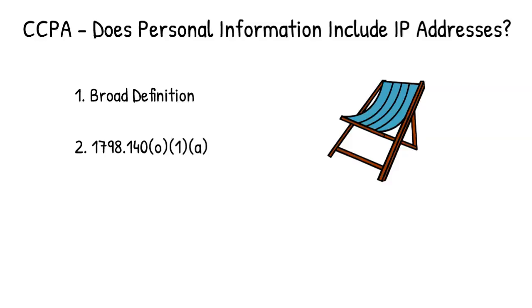The definitions — typically when you're talking about law, the first section is definitions: for this law, these are what these terms are going to mean. But for some reason, the CCPA definitions are in the middle of the law. And within the definition, so you might have a definition for something like 'service provider,' there will be new requirements regarding compliance. It's one of the most bizarre laws I've ever seen written. Half the battle is finding things — it's so difficult to get it organized.